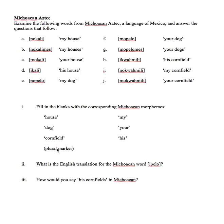Those morphemes are: house, dog, cornfield, plural marker, my, your, and his. That's it. There are many more forms in this language, but we don't need to know any of that. We need to just look at this problem as if it is its own self-contained universe. We've got our data set up top, and then we're going to essentially be answering questions in three parts. Part one is where we have meanings in English that we need to account for in this language, Michoacan Aztec.